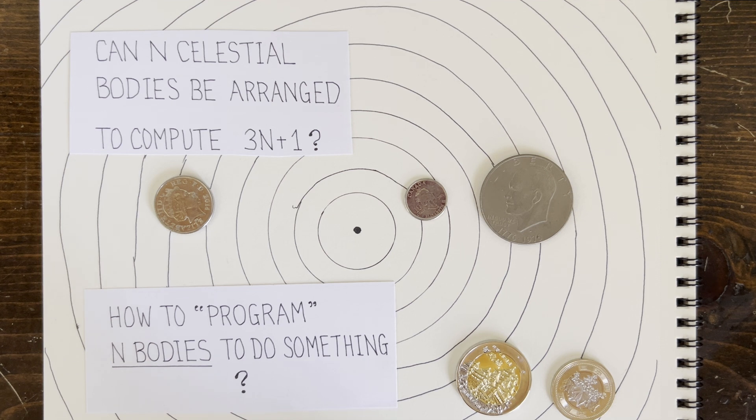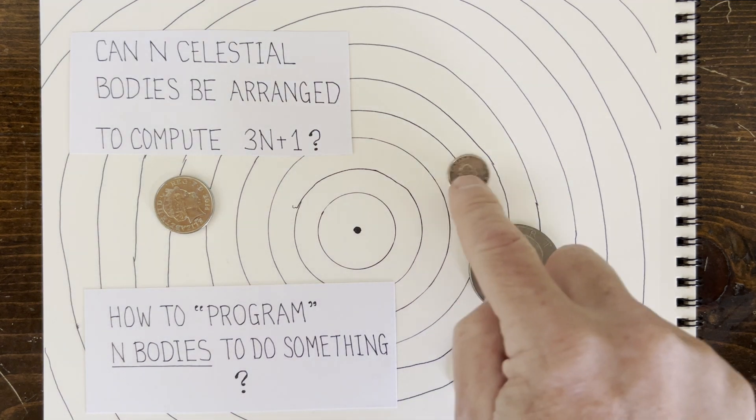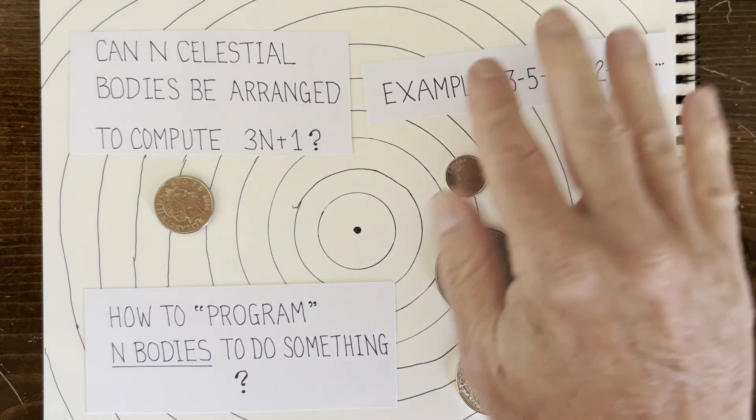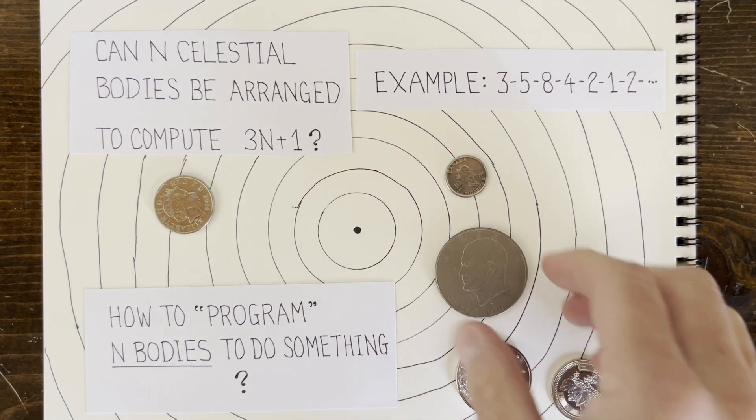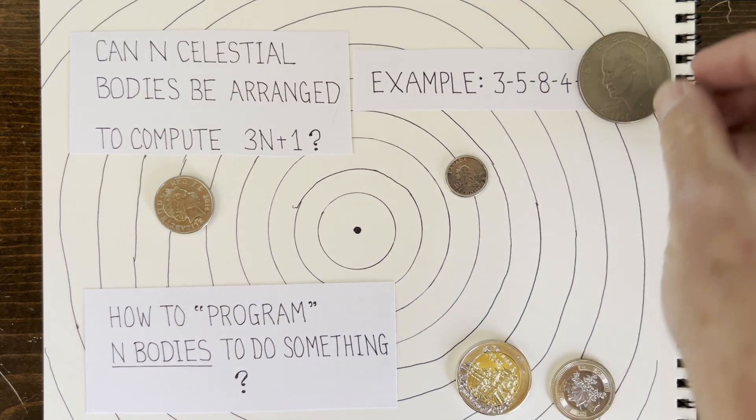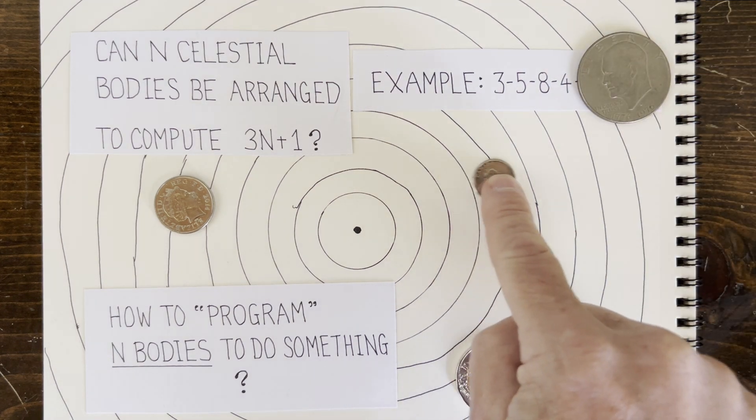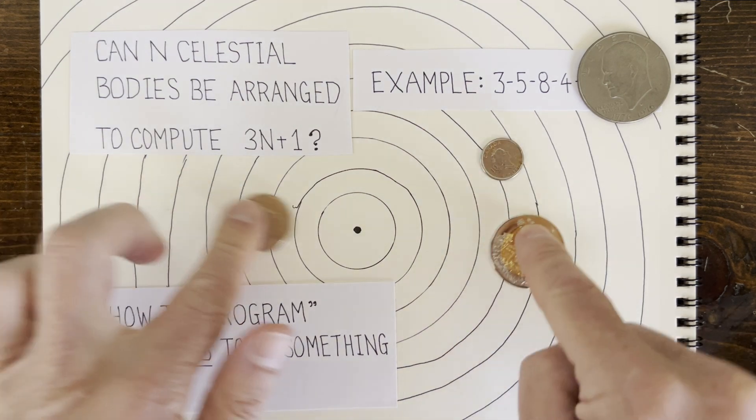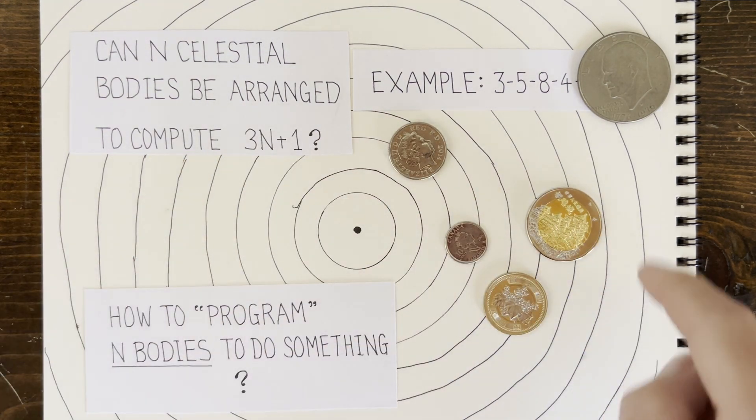Then, suppose we want our tiny satellite to follow the 3n plus 1 trajectory, but say just for start number 3, forget about all the other start numbers, and maybe just follow that trajectory for, say, three steps of the 3n plus 1 rule. Then where would we put the other bodies to ensure that happens? And kind of go from there.